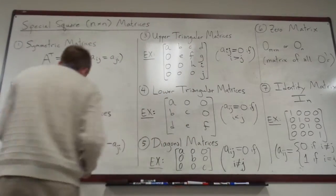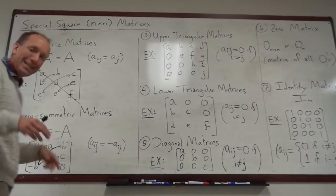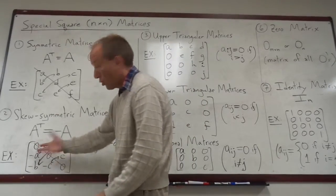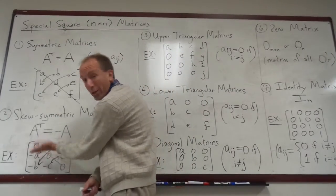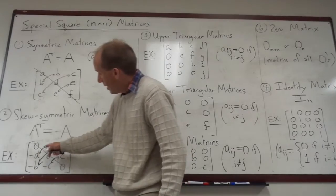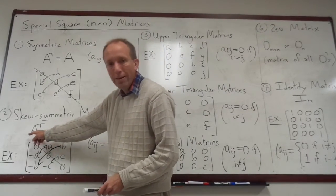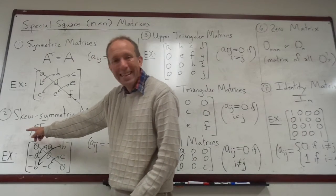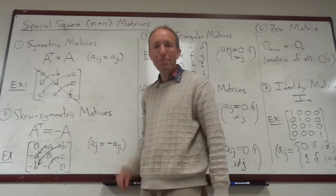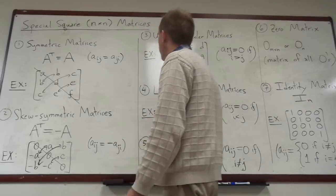The reason you have to have zeros along the main diagonal is that if you take the transpose of the matrix, which really flips it across the diagonal, the entries have to become negatives of each other. Because the definition of a skew symmetric matrix is that A transpose equals negative A. Okay. So we talked about that already before.